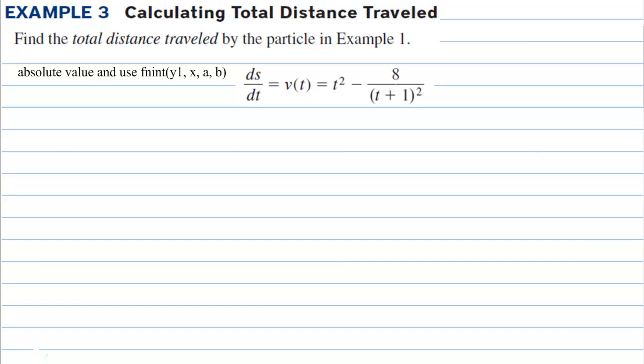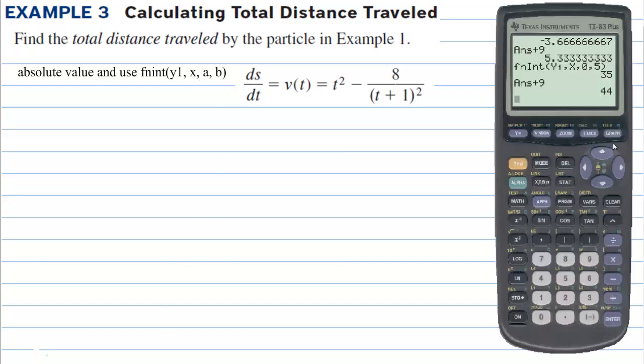In example 3, we're calculating the total distance traveled. Find the total distance traveled by the particle in example 1. We're going to use the absolute value with our calculator to find the total distance traveled. If we look at the graph, we have some negative area to the left of the 0 and positive area to the right of the 0. We want to make this negative area positive to get total distance traveled, not the net. And we can do that by taking the absolute value of the function.